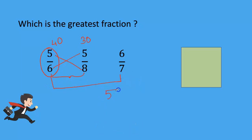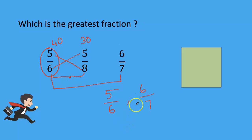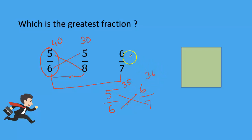Now compare the first and last: 5 by 6 and 6 by 7. Here also do the same — cross multiply. 6 sixes are 36, and 7 fives are 35. So 36 is bigger. The result is 6 by 7.